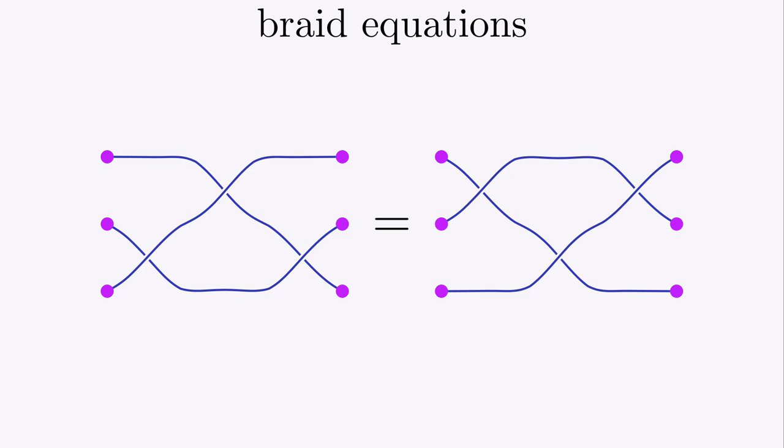This kind of reasoning is called topology, and manipulating anions this way, we hope to make a topological quantum computer.